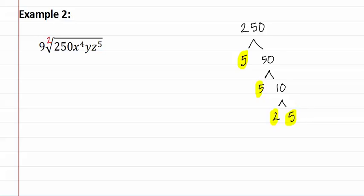Let's rewrite it underneath the radical. As two times five to the third, x to the fourth, y, z to the fifth. This is still a square root, and a nine is still outside.